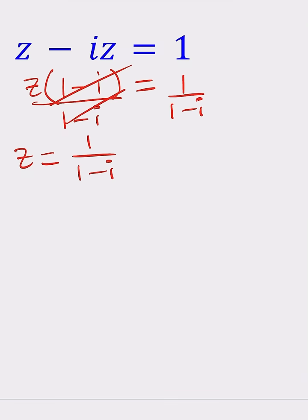But how do you divide complex numbers? We can actually do that. Just multiply by the complex conjugate, which is 1 plus i in this case.